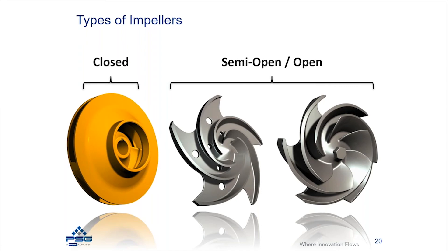With semi-open impellers, there's no front shroud on the impeller itself, which means the impeller has to be installed very close to the casing. The flow goes inside the impeller vane profiles, but the casing itself also acts as the front shroud on these particular pumps, controlling the flow path.